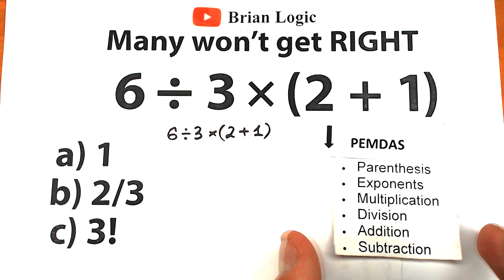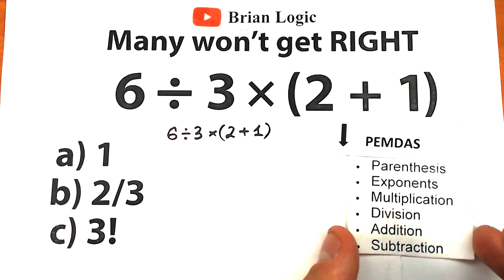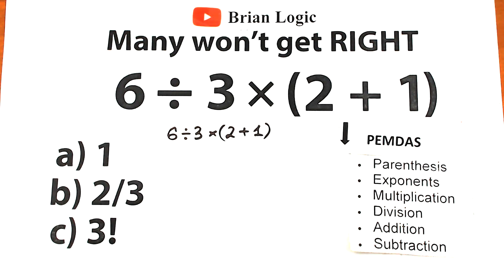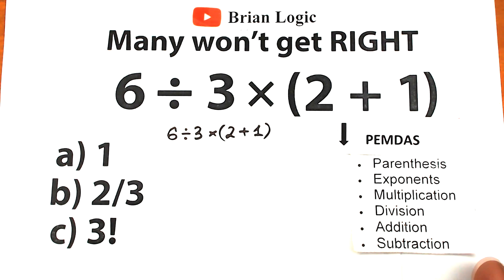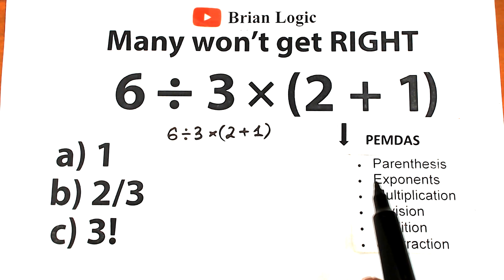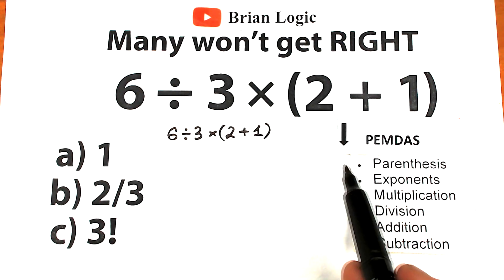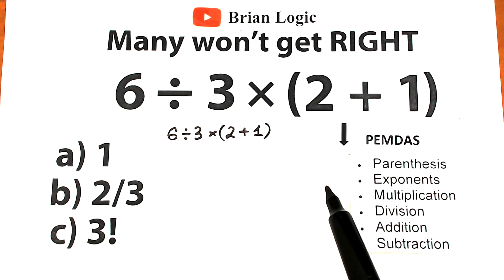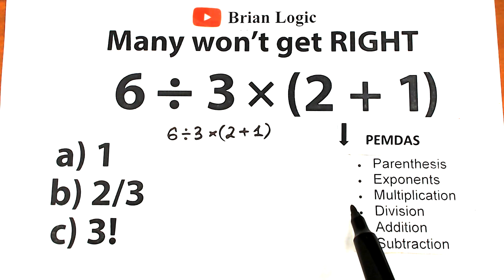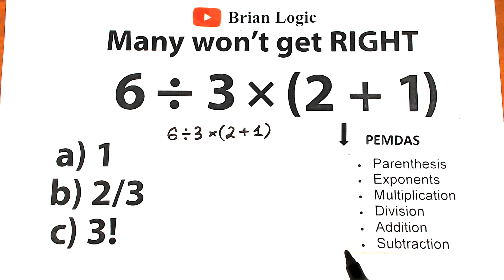PEMDAS is the most popular order of operations in the world, so let's solve this according to PEMDAS. How does PEMDAS work? It works from top to bottom: first we evaluate expressions inside parentheses, next we evaluate exponents — like squares or cubes — then the multiplication and division group, and finally the addition and subtraction group.